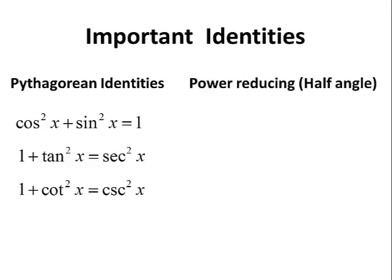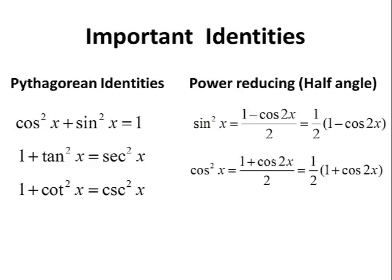Let's take a quick look at what I call the power reducing identities — you may know them as the half angle identities; they are one and the same. The first one is that sine squared x can be rewritten as 1 half times the quantity 1 minus cosine 2x. The second power reducing identity is cosine squared x equals 1 half times the quantity 1 plus cosine 2x. I call them power reducing identities because we are taking a sine squared or cosine squared and rewriting it with a trig function of power 1, hence reducing the power.